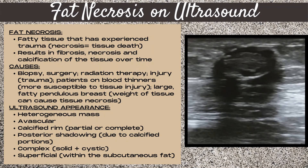Next, let's talk about fat necrosis. Fat necrosis and oil cysts really go hand in hand — where you find one, you often find the other. Fat necrosis is fatty tissue that has experienced trauma, resulting in fibrosis, necrosis, and calcification of the tissue over time. Causes include biopsy, surgery, radiation therapy, injury or trauma, patients on blood thinners, or large fatty pendulous breasts. On ultrasound it appears as a heterogeneous, avascular mass with a calcified rim either partially or completely surrounding it, distinct posterior shadowing, complex solid and cystic components, and is located superficially within the subcutaneous fat layer.